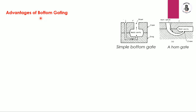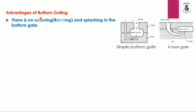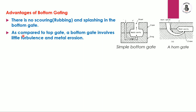The advantages of the bottom gating system include: first, there is no scoring, rubbing, or splashing — the molten metal enters the mold cavity easily without erosion or enlargement of the mold cavity shape and size. Second, compared to the top gate system, the bottom gate involves little turbulence and metal erosion — this is the major advantage. Third, the bottom gate produces good casting surfaces.